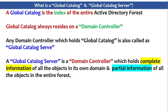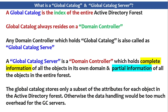There is a caveat here. A domain controller will definitely hold complete information of all the objects in its own domain, but if it's a Global Catalog, it will hold partial information of all the objects in the entire forest, not the complete information. The Global Catalog stores only a subset of attributes of each object in the Active Directory forest. If it held complete information, the data handling would be too much overhead. So Microsoft made sure that only partial information of all objects in the entire forest is stored with the Global Catalog.